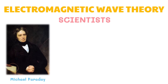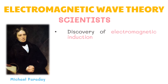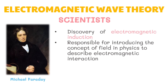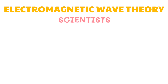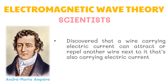Michael Faraday is best known for his discovery of electromagnetic induction, his contributions to electrical engineering and electrochemistry, and for introducing the concept of field in physics to describe electromagnetic interaction. He also made fundamental contributions to the electromagnetic theory of light. André-Marie Ampère made the revolutionary discovery that a wire carrying electric current can attract or repel another wire next to it that is also carrying electric current — the attraction is magnetic, but no magnets are necessary. He formulated Ampère's law of electromagnetism and produced the best definition of electric current during his time.